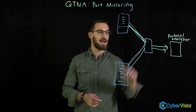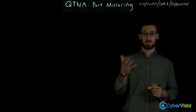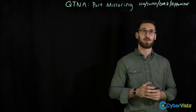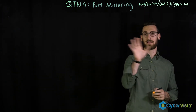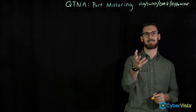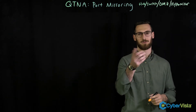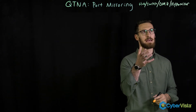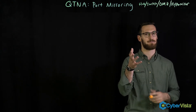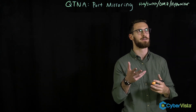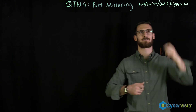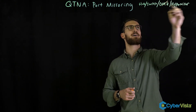So port mirroring happens on what device exactly? Let's look at the answer choices and eliminate a few right away. A DMZ is more of a zone or topology, not a device. A hypervisor is used in virtualization — also not a network device. So we're left between a switch and a hub.